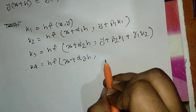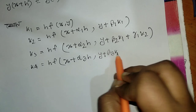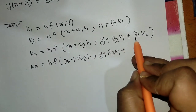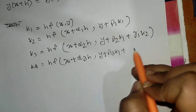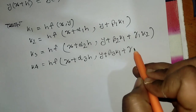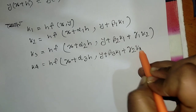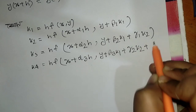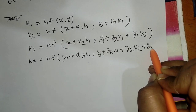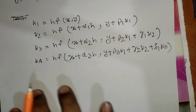k4 is f of x plus alpha3·h comma y plus beta3·k1 plus gamma3·k2 plus sigma1·k3.